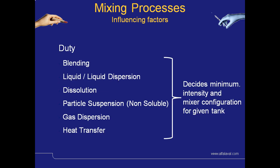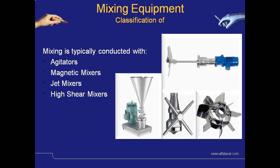As identified on previous slides, the duty influences whether blending, dispersion, dissolution, partial suspension, gas dispersion or heat transfer is required. This then decides the minimum intensity and mixer configuration for a given tank. Because of the variation in mixing tasks, it is realistically impossible to have one mixer that will do everything. Therefore, there are a number of different types of mixing equipment available to ensure that these tasks can be carried out satisfactorily.